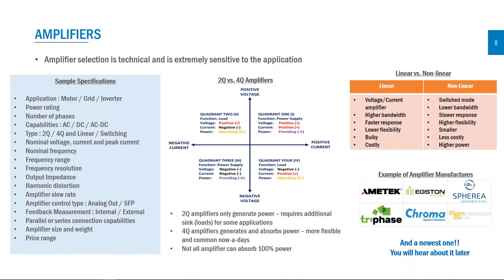There are different amplifier types: linear versus switching. A linear amplifier has higher bandwidth, faster response, but is bulky, costly, and less flexible for higher power. A switch-mode amplifier has lower bandwidth and slower response than linear, but provides higher flexibility and is easier to connect at higher power levels. Other important specifications include nominal voltage, current, peak current, nominal frequency, frequency range, frequency resolution, output impedance, harmonic distortion, amplifier slew rate, connection interface, feedback measurement, size, weight, and price range. All these parameters should be defined before selecting an amplifier.